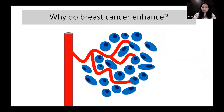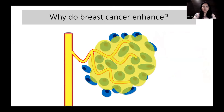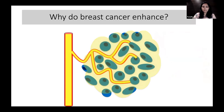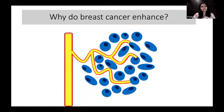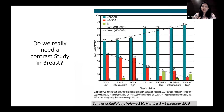Breast cancers enhance because they develop neovascularities, and because of leaky capillaries they enhance very fast in the first two minutes. The enhancement also washes out much earlier than benign tissue due to those leaky capillaries.